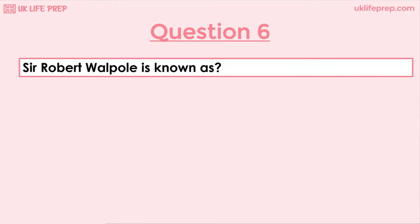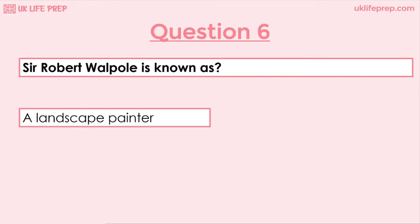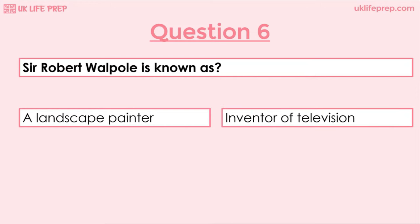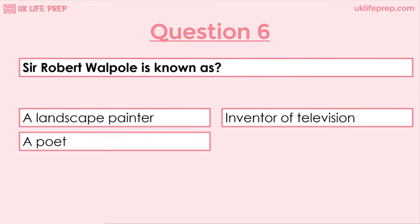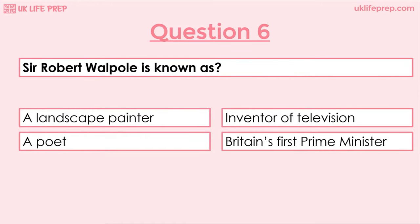Question 6: Sir Robert Walpole is known as a landscape painter, inventor of television, a poet or Britain's first prime minister? The correct answer is Britain's first prime minister.